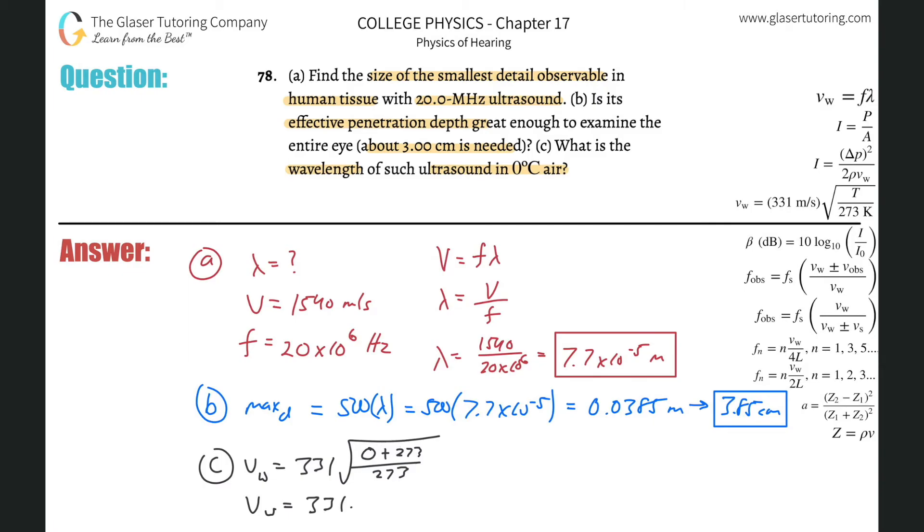Now it says what's the wavelength? The frequency of the wave stays the same; it doesn't matter what medium it travels through. So the frequency is still going to be 20 megahertz, or 20 times 10 to the 6 hertz. And now I can just use the formula again: wavelength is going to be equal to velocity over frequency, it's 331 all over 20 times 10 to the sixth.